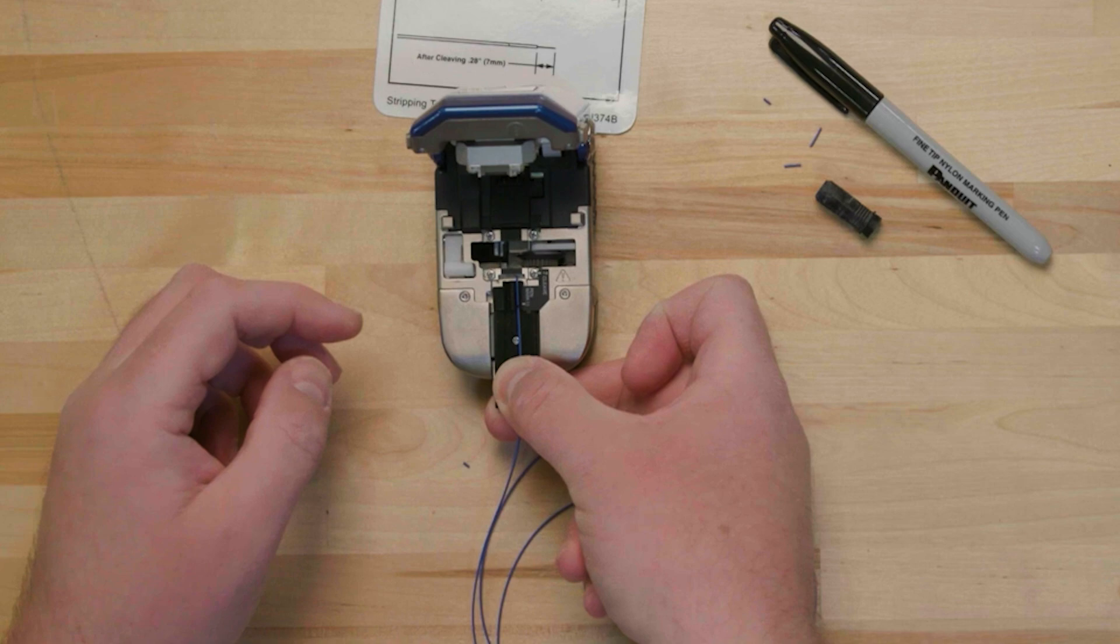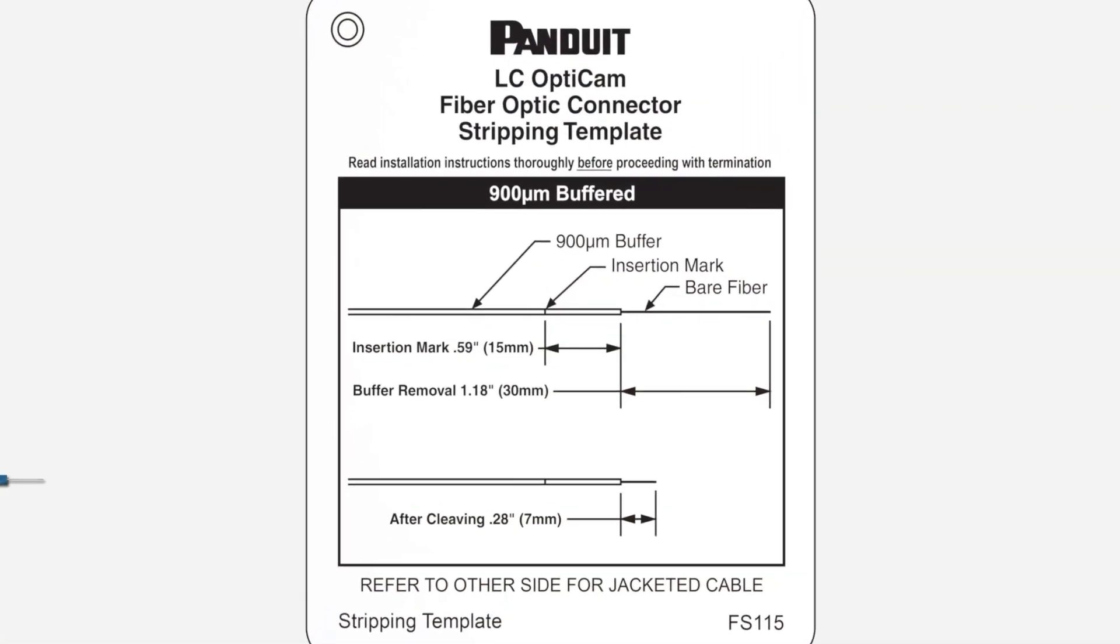Once the fiber has been cleaved, use the LC stripping template card to verify that the fiber is 7 millimeters long.